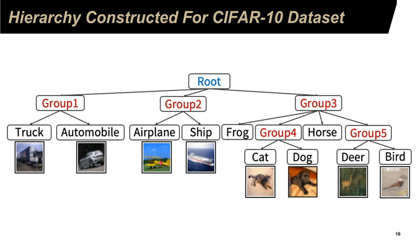This is the tree built for the CIFAR-10 dataset, and it reveals a few important properties. This method does not predetermine the number of children — we do not select the tree to be a binary or trinary tree. The number of children is determined by the data. The softmax layer determines that truck and automobile are visually similar, and airplane and ship are visually similar. One node has four children — two leaf nodes for frog and horse, and two additional child nodes. Leaf nodes may also have different distances to the root: the truck is two nodes down, while cat is three nodes down.